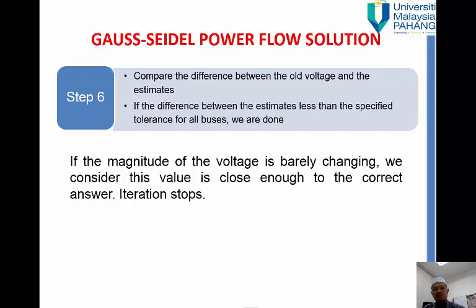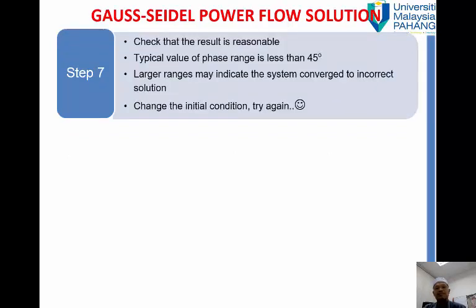Or if the magnitude of voltage barely changing because this value is close enough to the correct answer, stop. Then you check the result if the result is reasonable. Typical value for the phase angle is less than 45 degrees but it's not necessarily, never mind. So the larger ranges may indicate the system which diverges. So if it goes for the divergence you change the initial condition and try again.